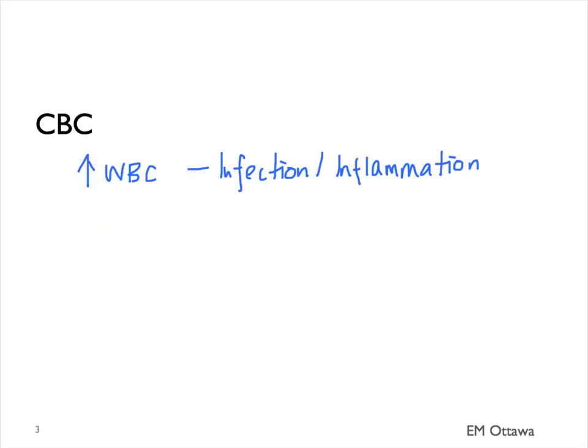In the CBC, if there is an infection or an inflammation, the white blood cell count might be increased. If the patient is bleeding, their hemoglobin might be low. In terms of their electrolytes and creatinine, the patient's potassium might be low because of repeated diarrhea. In the patient who has lost volume, their creatinine might also be increased.